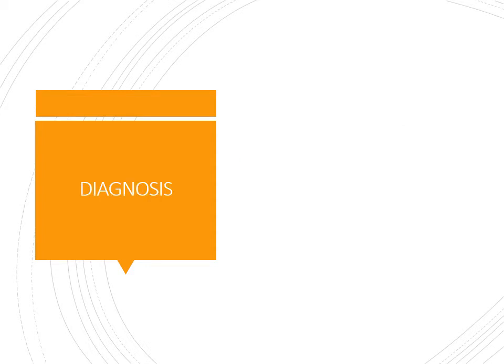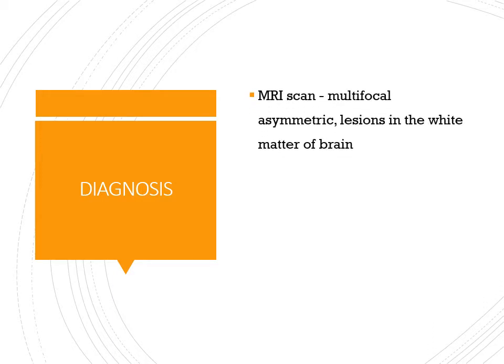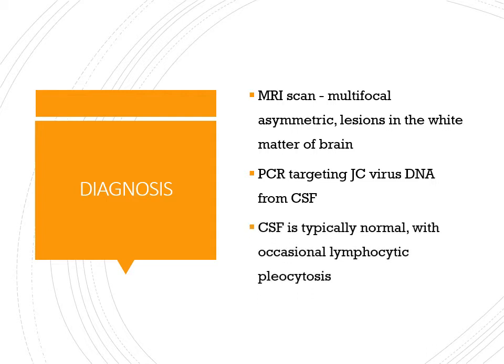For diagnosis of PML, MRI scan is used — you can notice multiple asymmetrical areas of lesion in the white matter of the brain. PCR can detect the virus from the CSF. CSF biochemically is usually normal, and occasionally lymphocytic pleocytosis can be noticed. Mainly PCR to detect the virus and MRI scan to suspect slow virus disease.